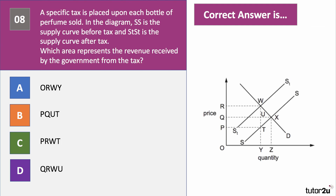Question eight. A specific tax is placed upon each bottle of perfume. In the diagram, SS is the supply curve before the tax and STST is the supply curve after the tax. Which area represents the tax revenue received by the government? Have a go at question eight.